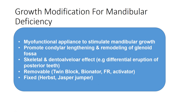For mandibular deficiency, growth modification is undertaken using myofunctional appliances to stimulate mandibular growth. This promotes condylar lengthening and remodeling of the glenoid fossa, producing both skeletal and dental alveolar effects. The dental alveolar effect involves differential eruption of the posterior teeth. Examples of appliances include removable types such as twin blocks, bionators, function regulators, and activators, and fixed types such as the Herbst appliance or Jasper Jumper.